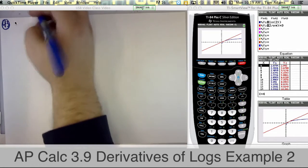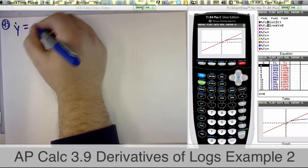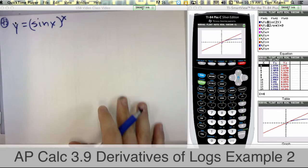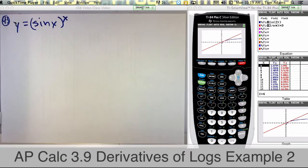So for problem number 43, we've got y equals sine of x raised to the x. So now when we look at this one, you might think to yourself, this is an exponential function.